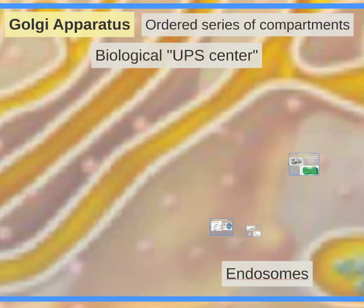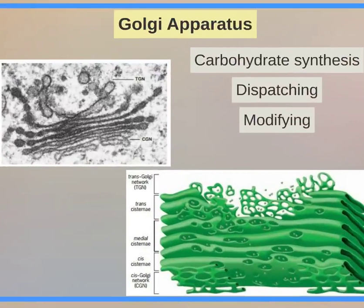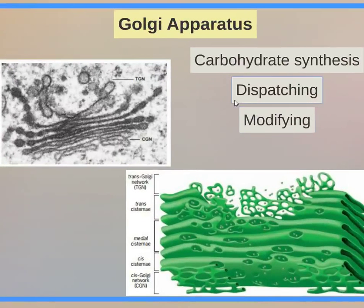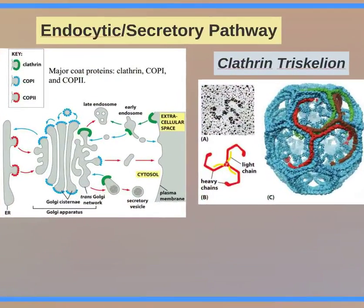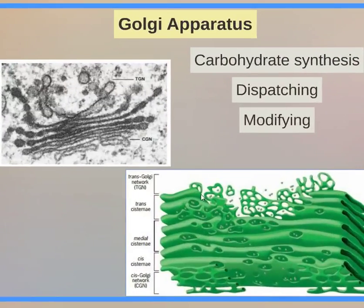The Golgi apparatus is an ordered series of compartments and is considered the biological UPS center. It's associated with endosomes, which are vesicles of materials taken in by the cell. It's the site of carbohydrate synthesis and is responsible for dispatching and modifying cargo. The trans-Golgi network is the more chaotic-looking side, facing outward away from the nucleus. The cis side — meaning same — faces the nucleus.